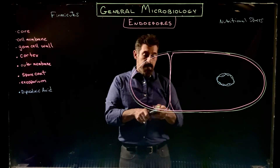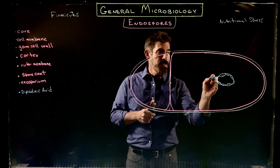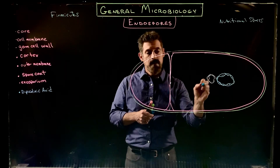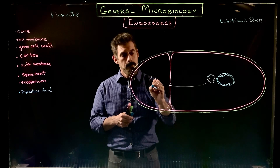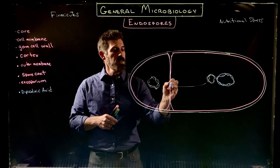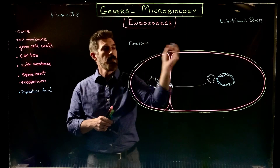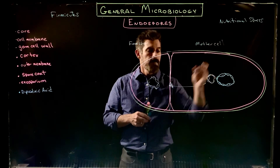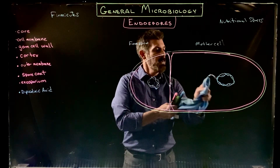The cell is going to divide, and there's actually a transport protein that will then take the new DNA through DNA replication over into this compartment. We're going to refer to this as the forespore, and this as the mother cell. So now the forespore has its own DNA.